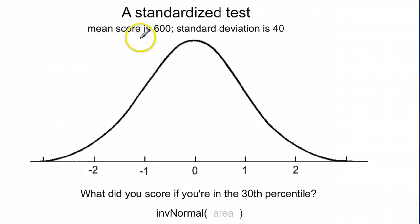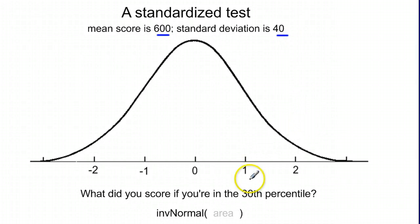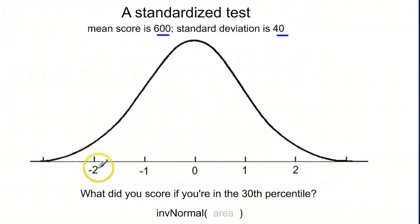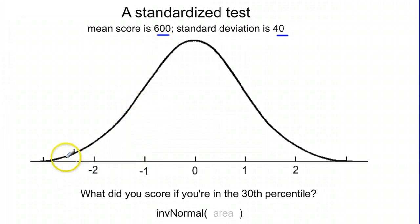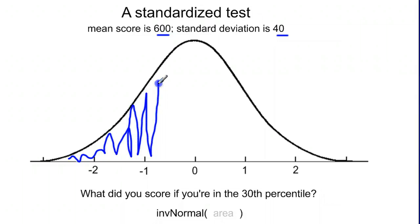For example, we go back to our standardized test with a mean of 600 and a standard deviation of 40. It says: what score did you get if you were in the 30th percentile? The 30th percentile means 30% of the area at the bottom is shaded, so there's some value for which 30% of the normal curve is being colored in.